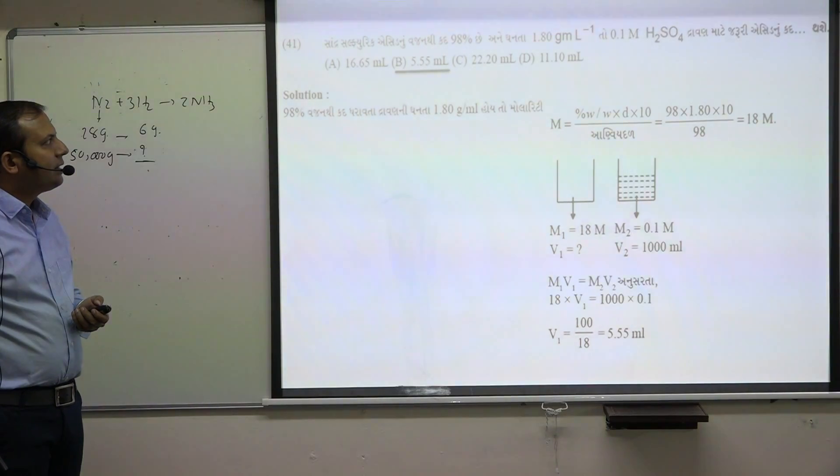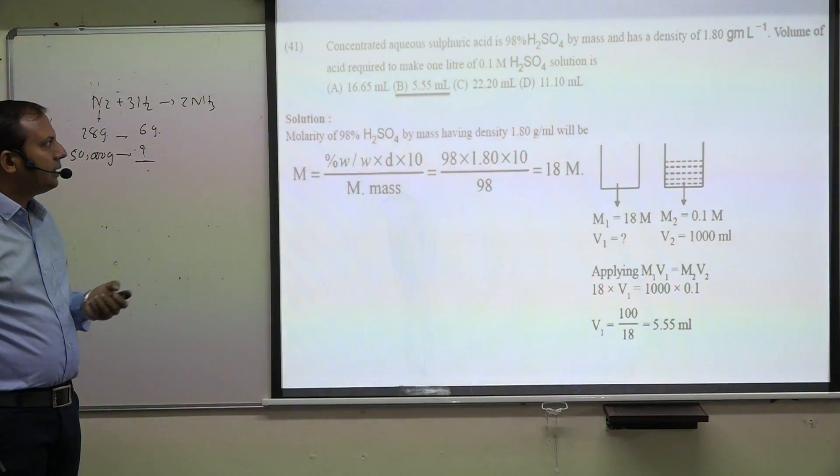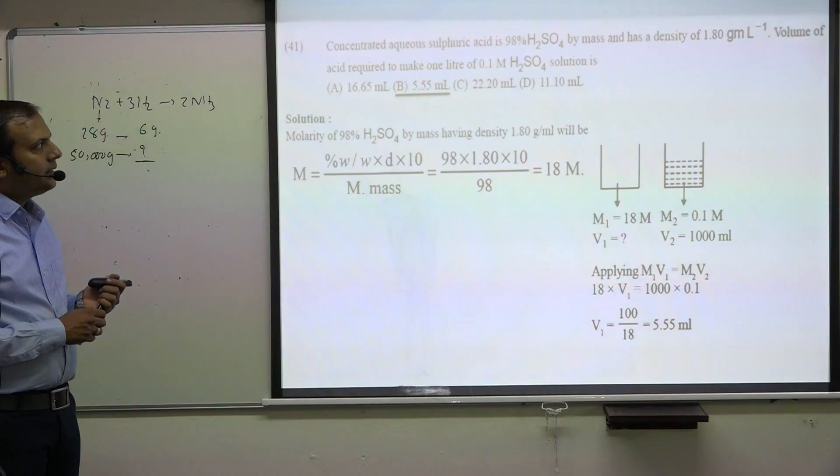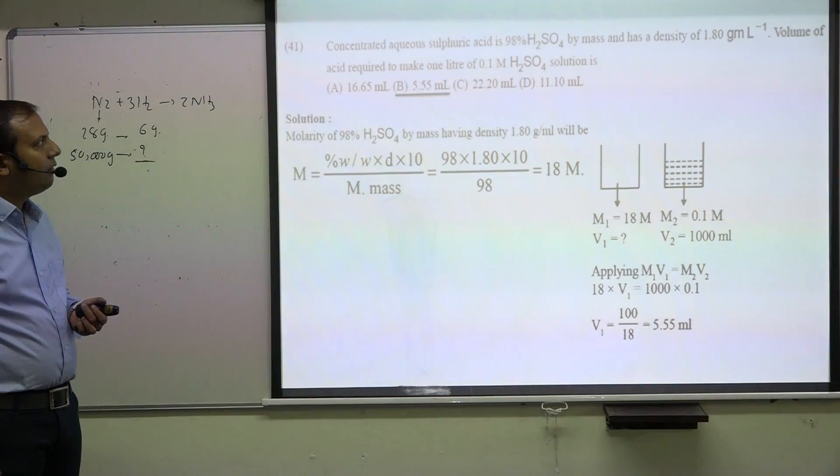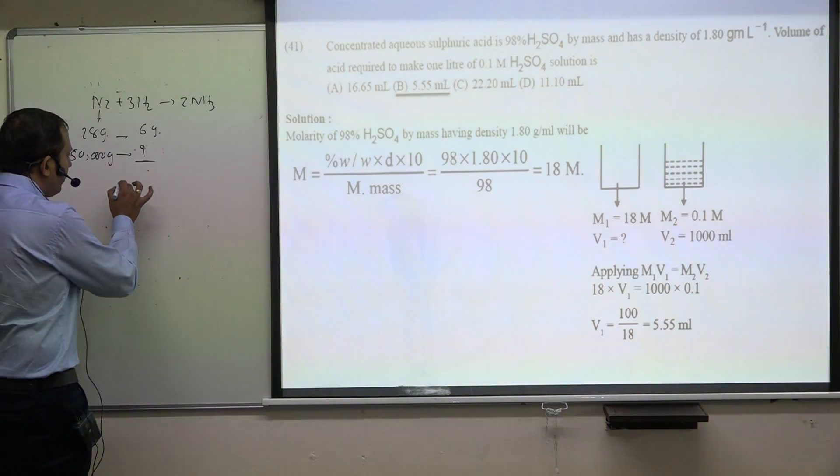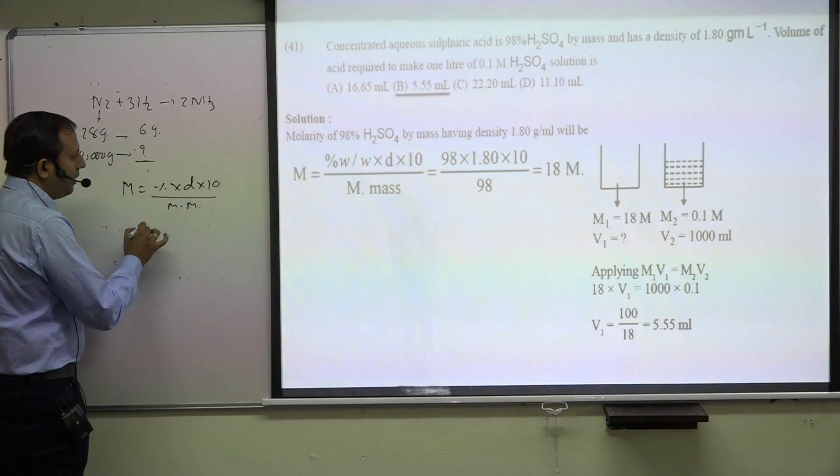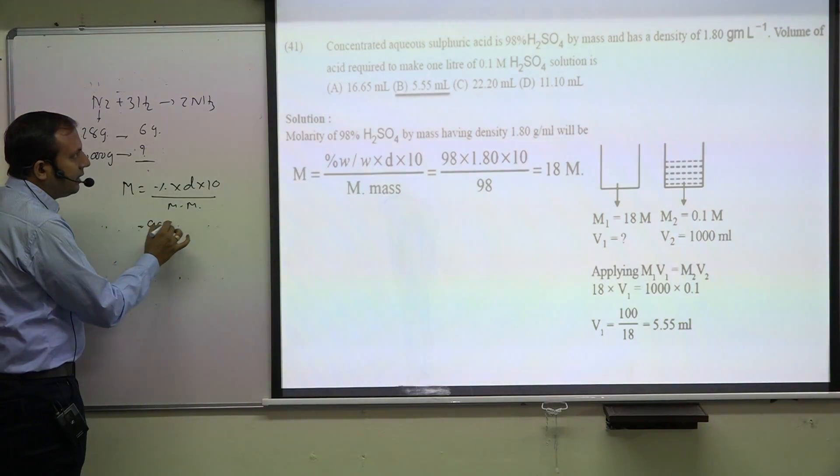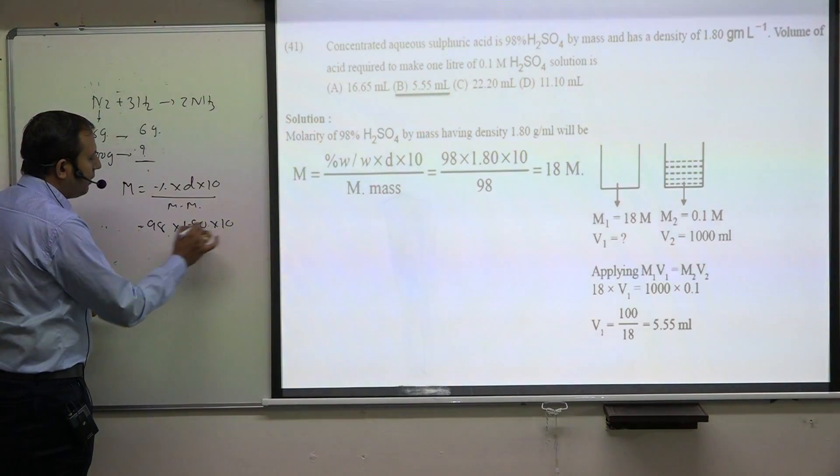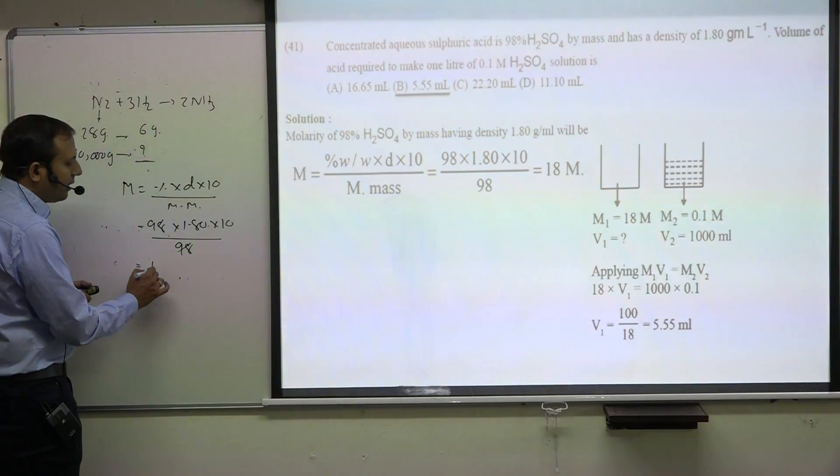Concentrated aqueous sulfuric acid, 98 percentage H2SO4 by mass, has density 1.8 gram per ml. Volume of acid required to make 1 liter of 0.1 molar H2SO4 solution. First find molarity: percentage times density times 10 divided by molecular mass. 98 times 1.80 times 10 divided by 98 gives 18 molar.